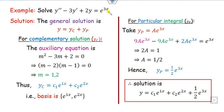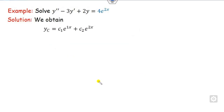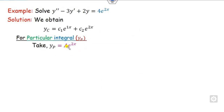Look at the second example, which is similar to the previous one — the left-hand side is the same, only the right-hand side is replaced. We again find the complementary solution the same way. Now for yp: if we take yp = Ae^(2x), we check that e^(2x) is present in yc. If we try to substitute this form, we find y', y'', and substitute the values. What we get is 0 on the left, which gives no information about A.